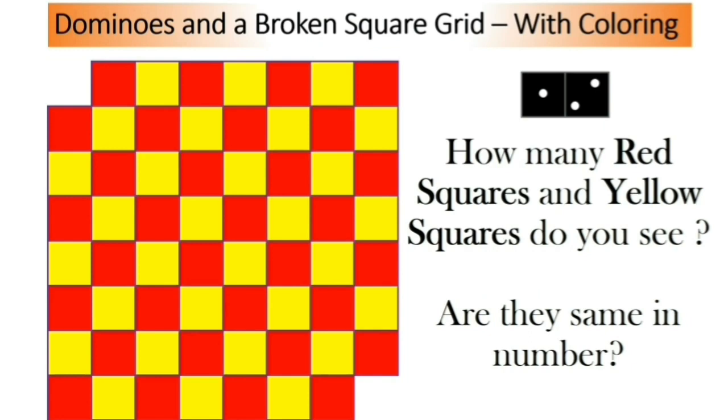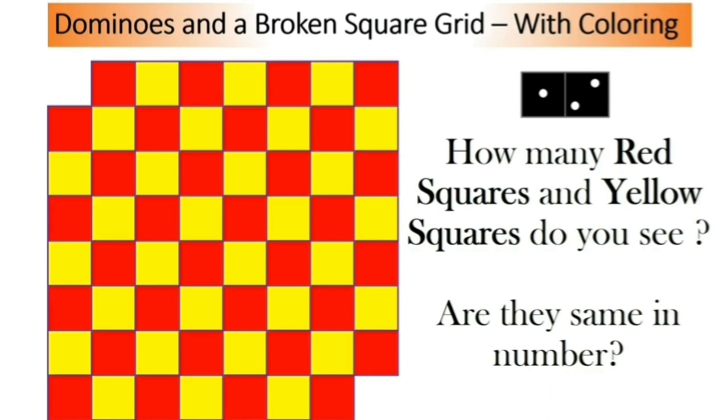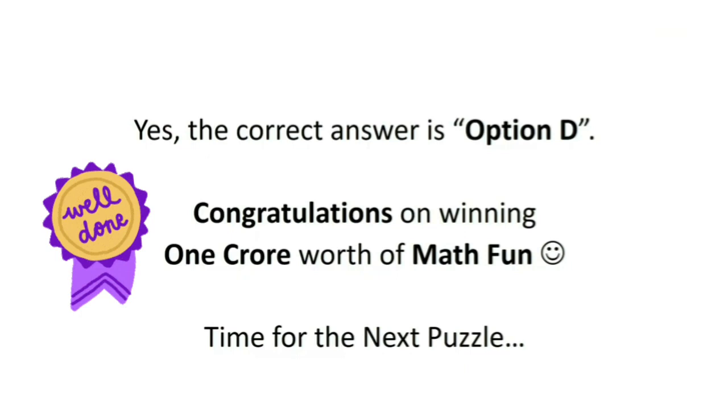Now, let's look at the broken square grid. We have used the same coloring, but let's count the number of red squares and yellow squares. Do you think they are equally numbered? They are not equally numbered. So however much we try, it's impossible to cover this broken grid with dominoes. Because every domino covers one red square and one yellow square. If you are able to place dominoes here, they should cover same number of red and yellow squares. Since this grid does not have the same number of yellow and red squares, the answer is option D. Congratulations, we have won one crore worth of math fun. Was that fun?